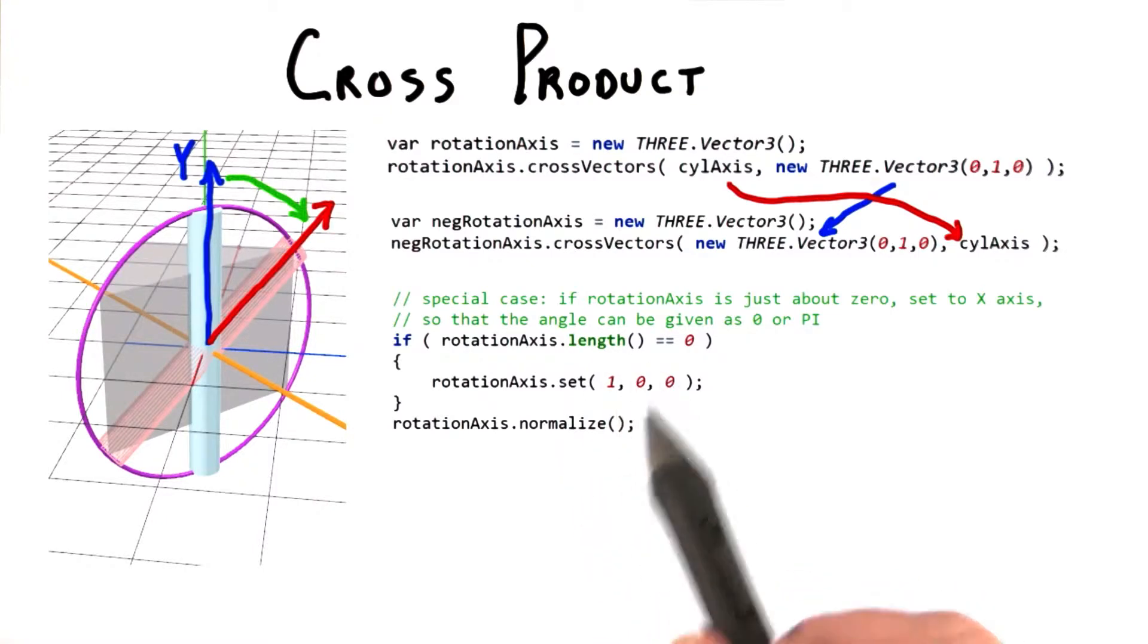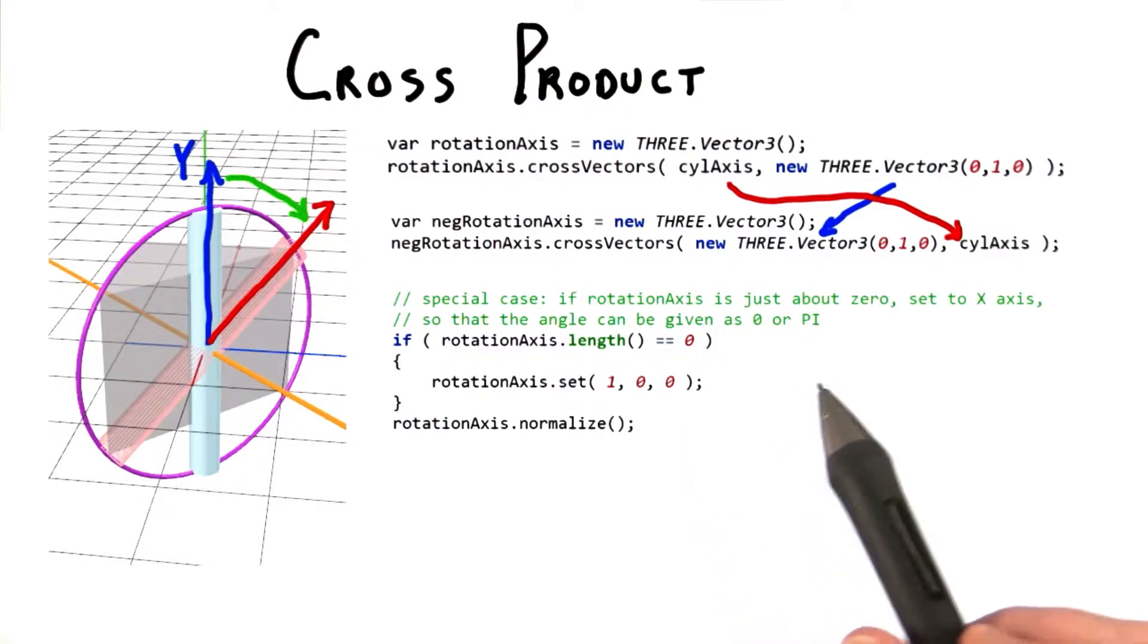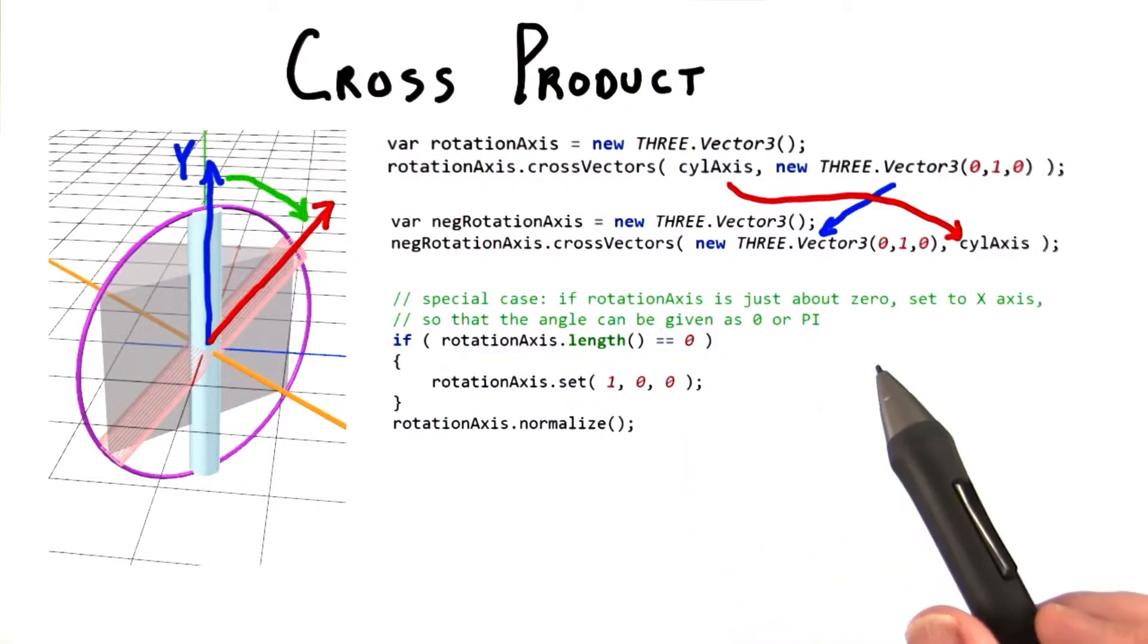There is one special case I'm going to point out, and it's kind of a headache. If the cross product gives back a vector that is of length 0, or nearly so, then the two vectors are either pointing in the same direction, or in directly opposite directions. You can use the dot product of the two vectors to figure out which. If they point in the same direction, then you're done. You don't need to rotate at all.